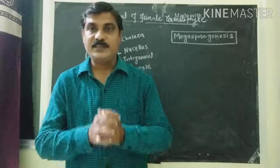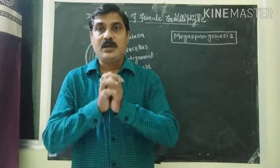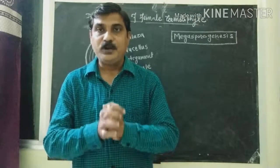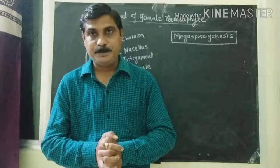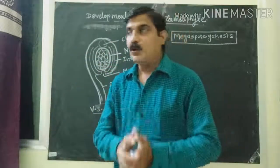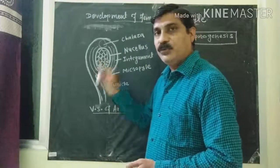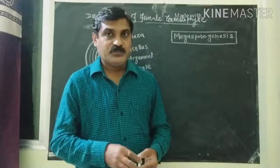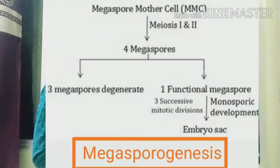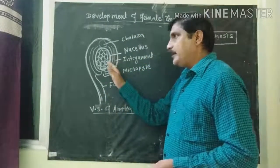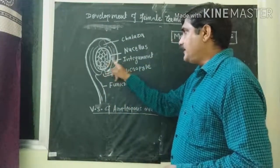Megasporogenesis is the process in which formation of haploid megaspore takes place from the diploid megaspore mother cell. This process takes place in the nucellus of ovule. The megaspore is haploid, which is produced from that megaspore mother cell. Now, where is the megaspore mother cell present? In the nucellus there are...